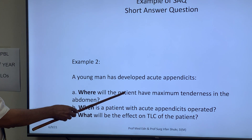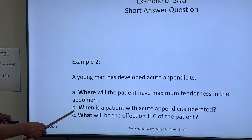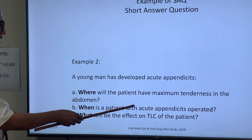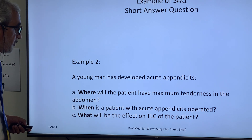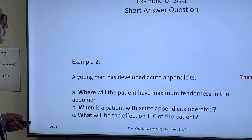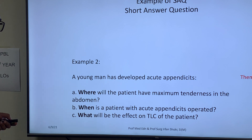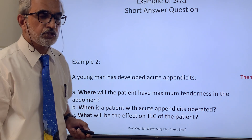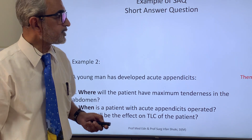Following the scenario, the questions are: 'Where will the patient have maximum tenderness in the abdomen?' 'When should the patient with acute appendicitis be operated?' 'What will be the effect on TLC of the patient?' The answers to these questions are usually a few words or one or two sentences.